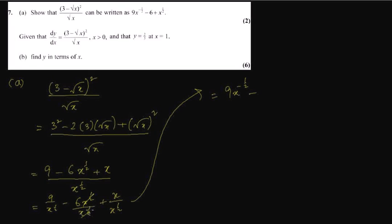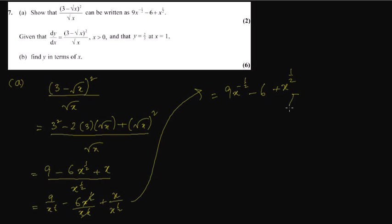If you bring x to the power half upstairs, it would be x to the power minus half. You can cancel this: half minus half is 0, x to the power 0 is 1, so this becomes 6. Plus, x to the power 1 divided by x to the power half — when we have division in indices, the power is subtracted. So 1 minus half is half, giving x to the power half. So we have shown this.